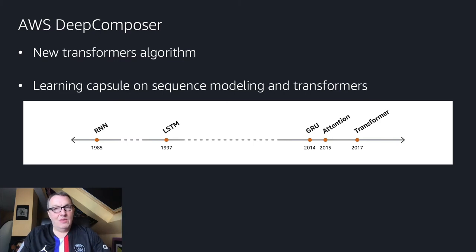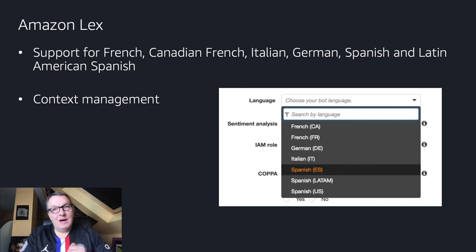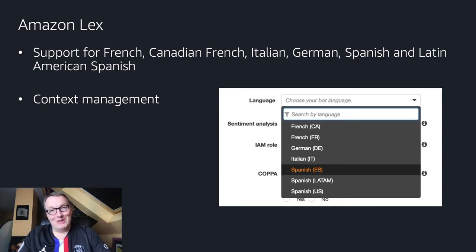So musicians, you can now start using Transformers to make some music! Amazon Lex is our chatbot service, and it now supports additional languages — French, Canadian French, Italian, German, Spanish, and Latin American Spanish. So if you already have English language bots, you can localize them for all these countries and languages. And if you never worked with Lex because it only supported English, this is your chance. French, Italian, German developers, and everyone else — it's time to learn about Lex and build some cool voice-based apps.